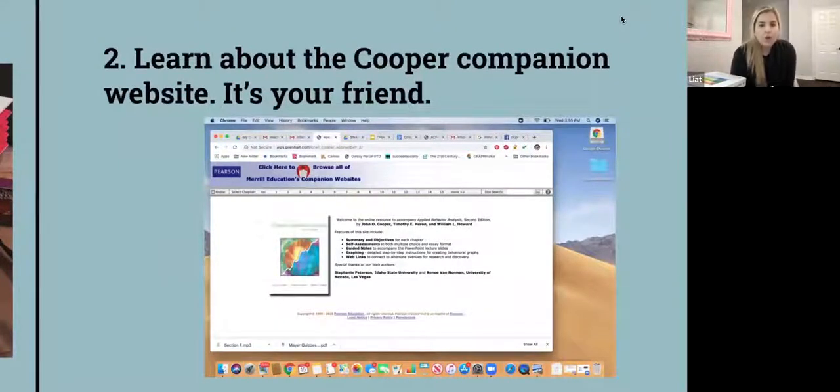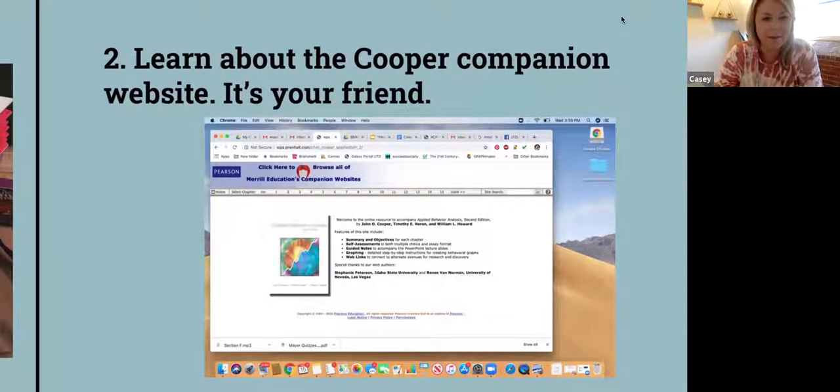This is also really important. Learn about the Cooper Companion website. It's your friend. The Cooper Companion website is the book, Pearson, the makers of the book, have created this website, which has chapters. You can see you could select a chapter, you could take quizzes on it. There's guided notes on each chapter. But what I'm really wanting you guys to do is take the quizzes. Any free questions from a credited source like the book makers themselves, the publishers themselves, are great opportunity for you to practice going over what you have read.